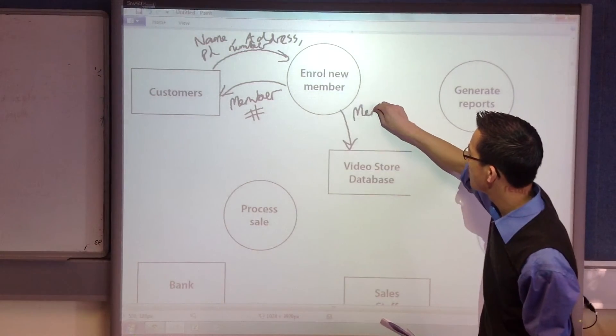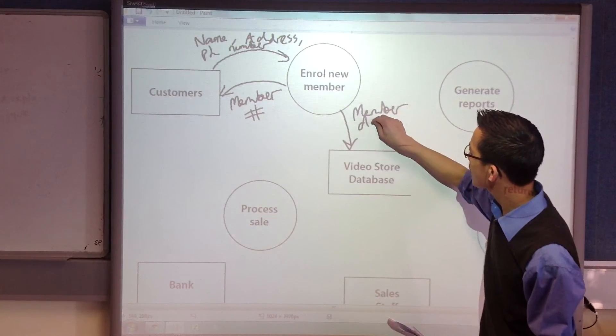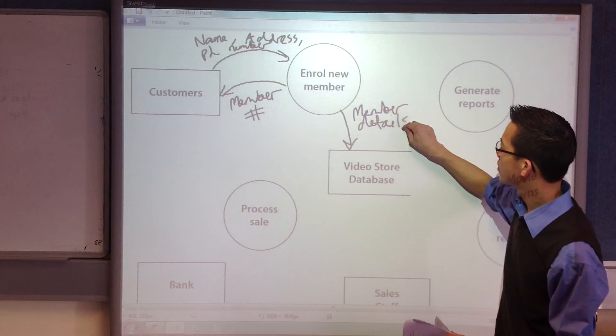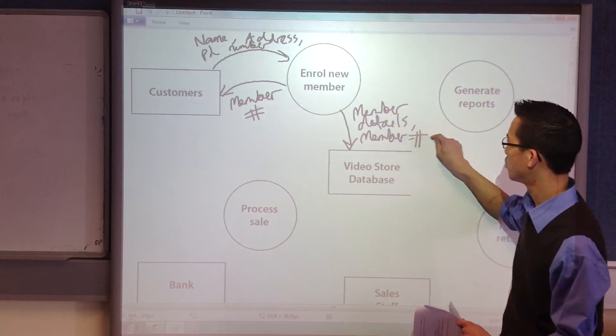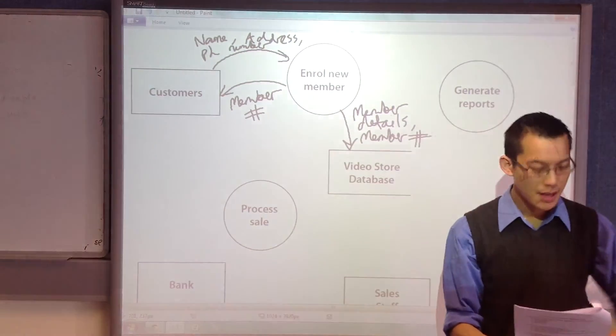So, we would put the member details and their member number or their ID number if you want to be a little more concise.